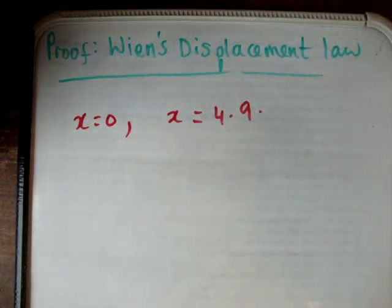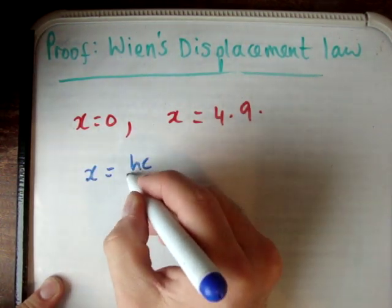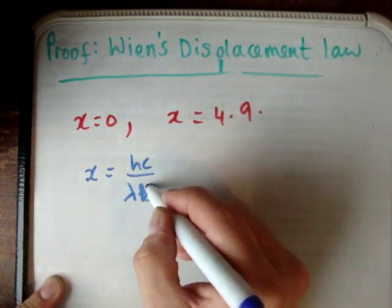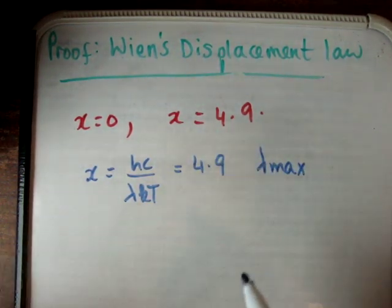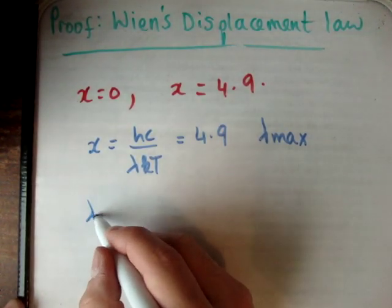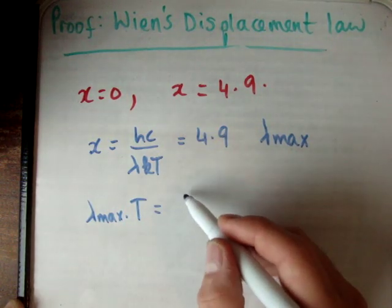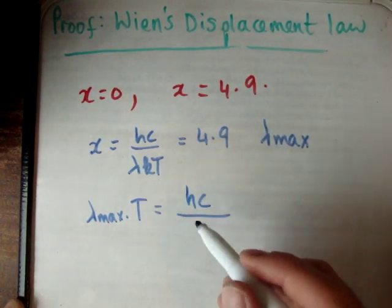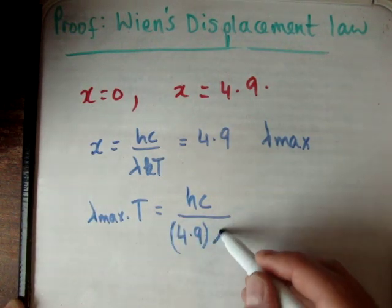We said a moment ago that x was equal to hc over lambda kt. And that's going to be equal to 4.9 for lambda max. Therefore, lambda max times t is equal to hc over 4.9 times k.